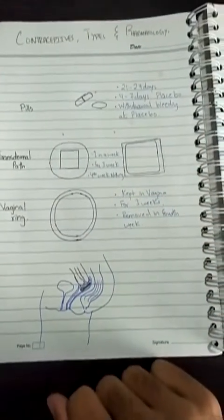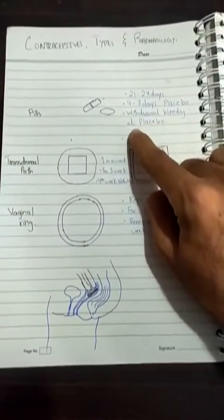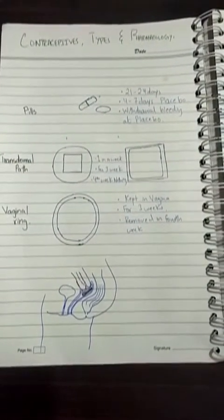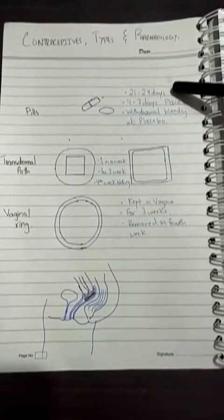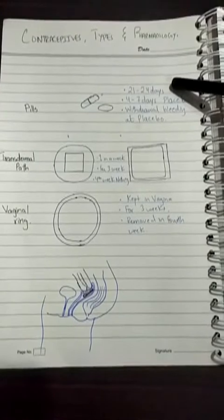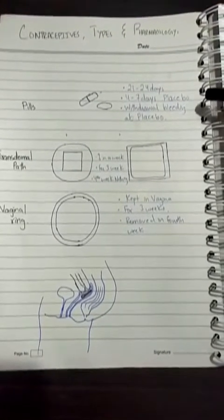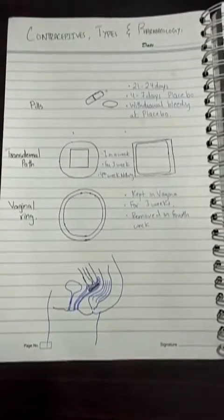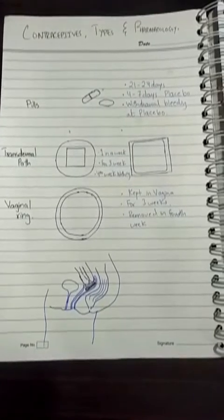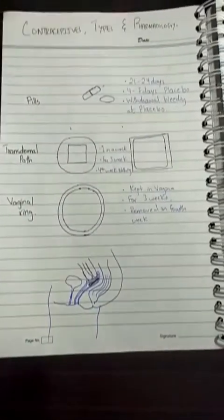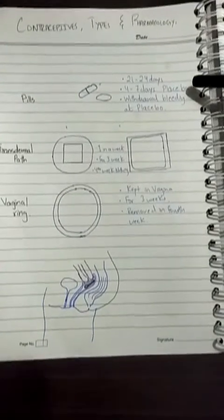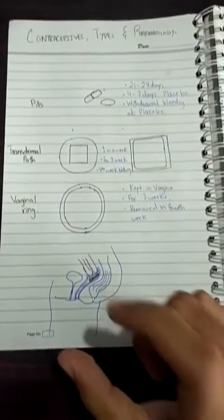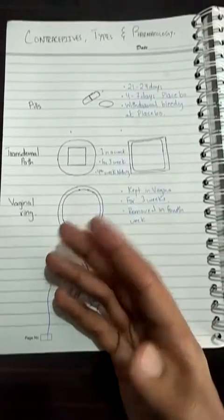The first type is the contraceptive pill, which contains the same combination of ethinyl estradiol and progestin. These pills are given for 21 to 28 days, followed by four to seven days of placebo. A placebo does not contain any active ingredient but plays with the patient's psychology. Due to placebo withdrawal, bleeding occurs — this is any type of bleeding that occurs instead of menstruation.